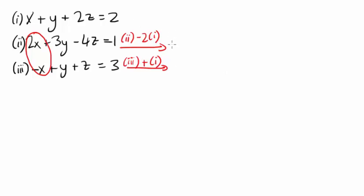This gives the results y minus 8z equals minus 3 and 2y plus 3z equals 5. That's two equations now in two unknowns.